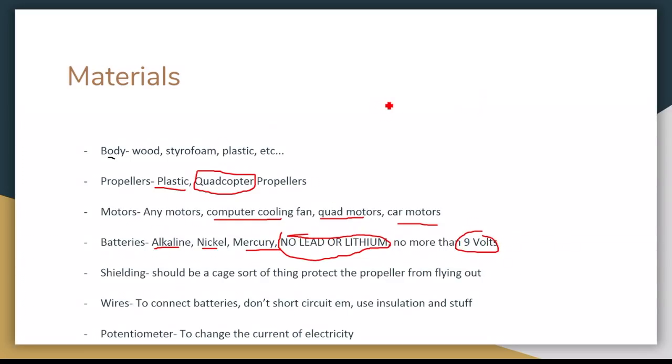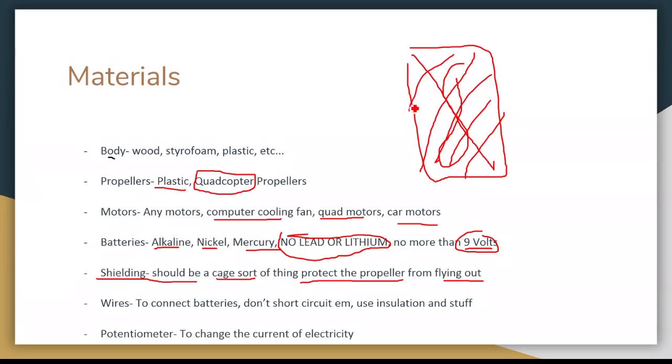So at any given point in your wires, in your motor, anywhere, you can't have more than 9 volts of charge going through. So shielding should be like a cage that protects your propeller from flying out. So this is like your propeller let's say. So you want to have like a cage around it and like a cage thing to protect if the propeller goes flying out. So you have to have holes between them which would be like this hole that is less than 3 eighths of an inch.